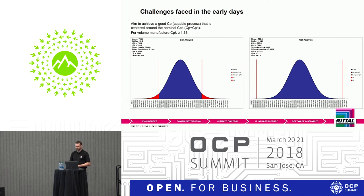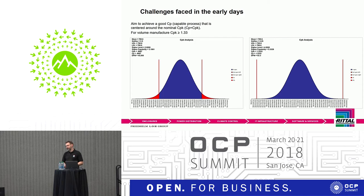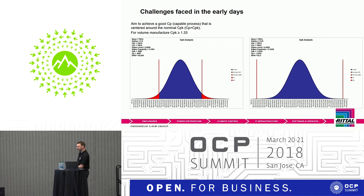A CPK value of 1.33 or greater is the industry standard for running a production system. Anything lower and you're going to get unacceptable rejects, costing value and creating waste. The graph on the left explains CPK — I won't go too deep as there may be Six Sigma experts in the room — but it shows a CP value of 0.66, which is less than 1.33.